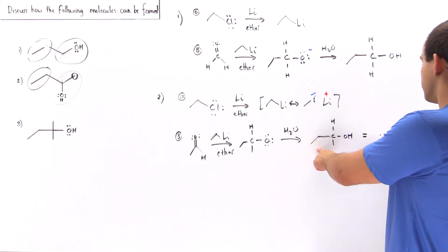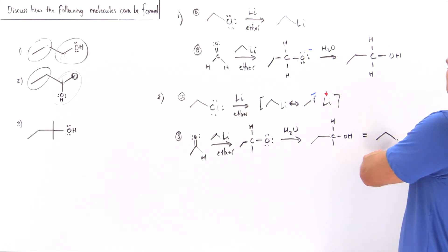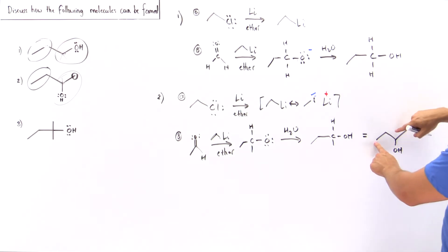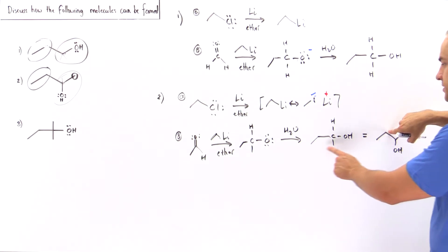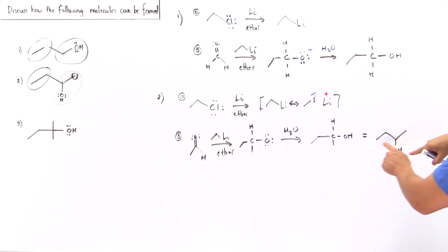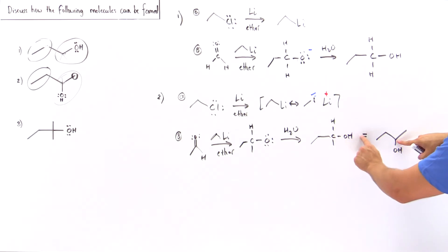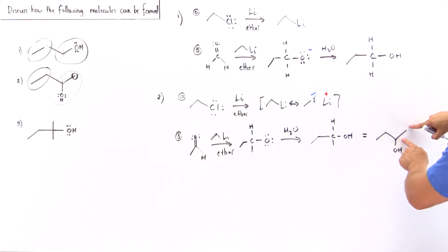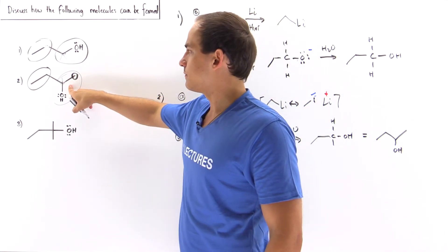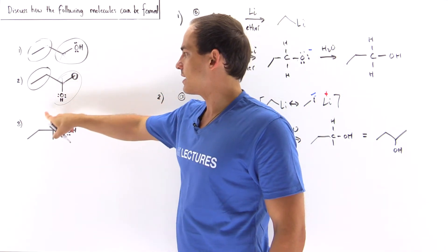The secondary alcohol product can be drawn equivalently showing our OH group with two carbons on one side and two carbons on the other side attached to the carbon bearing the OH. This is exactly the secondary alcohol we wanted to form.